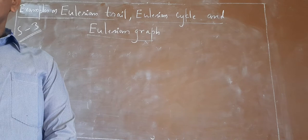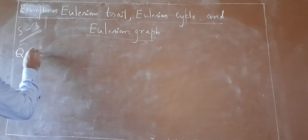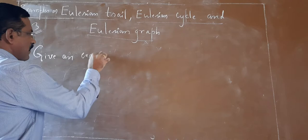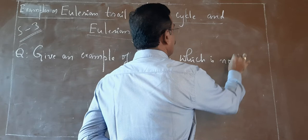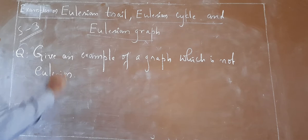Let me consider some more examples to clarify the concept properly, because in the coming classes we are going to discuss the characterizations of the Eulerian graph and Eulerian trail. Another question: give an example of a graph which is not Eulerian.